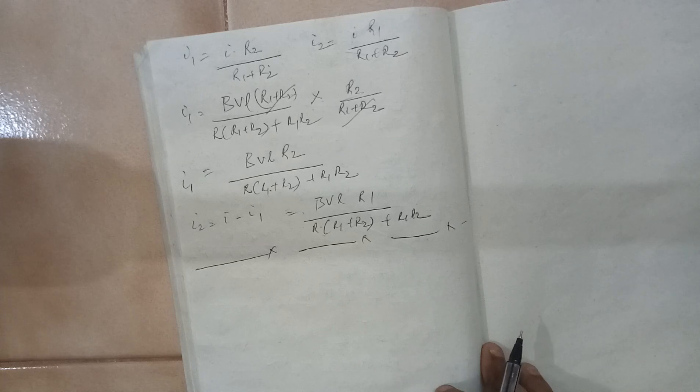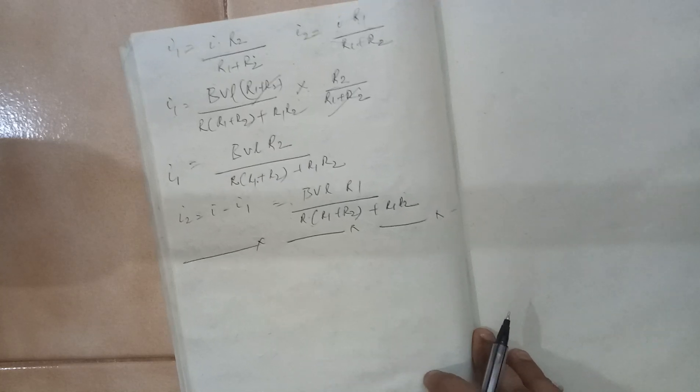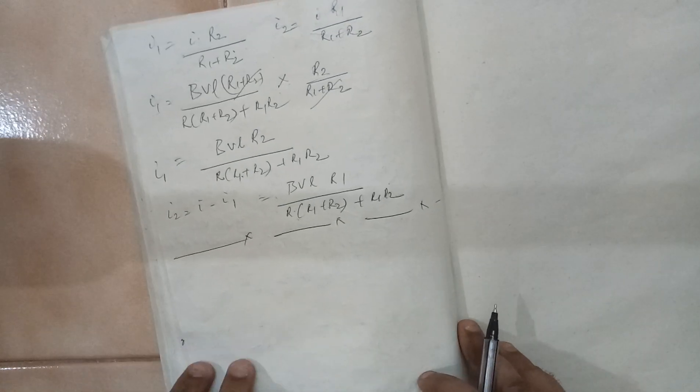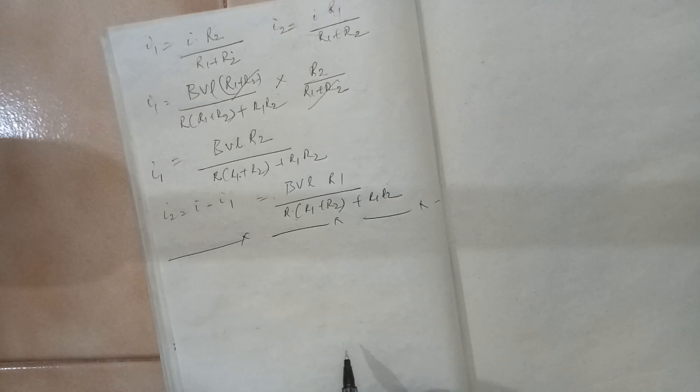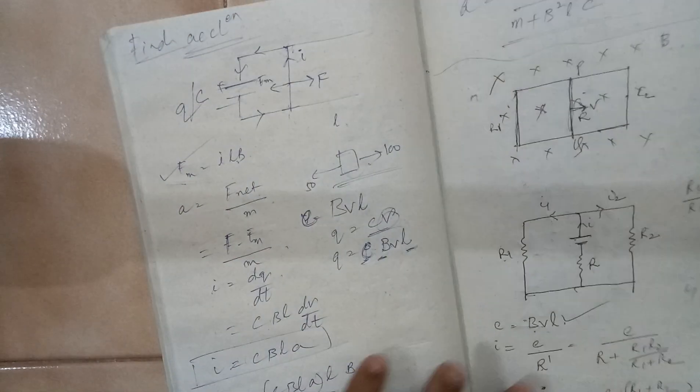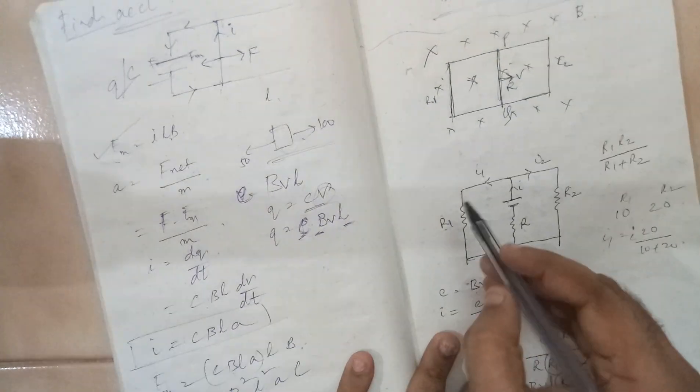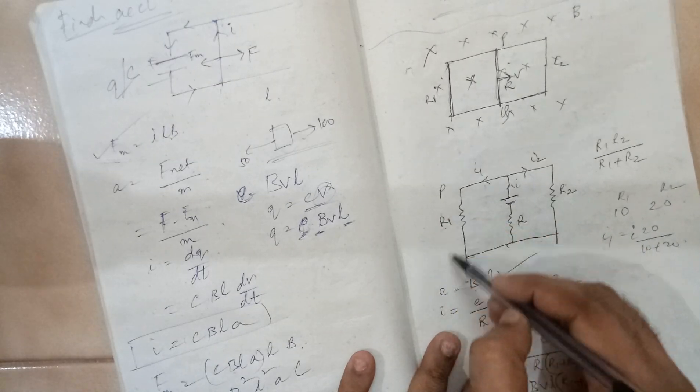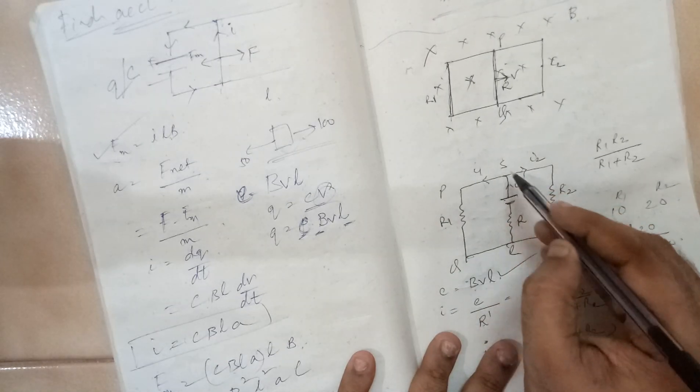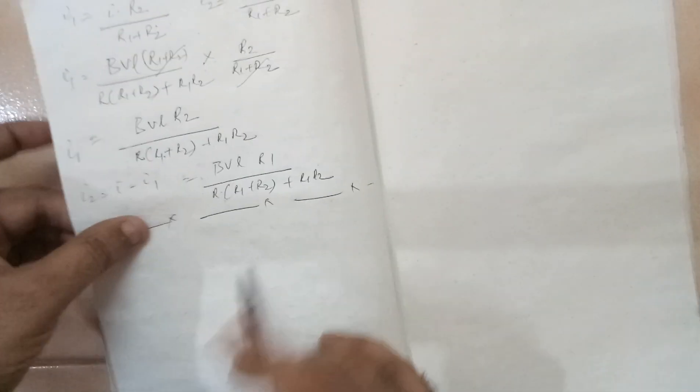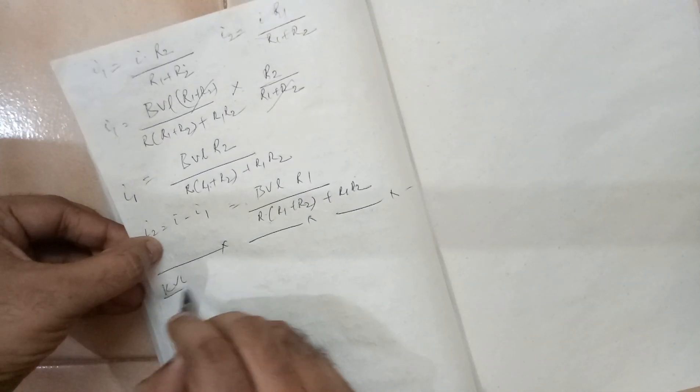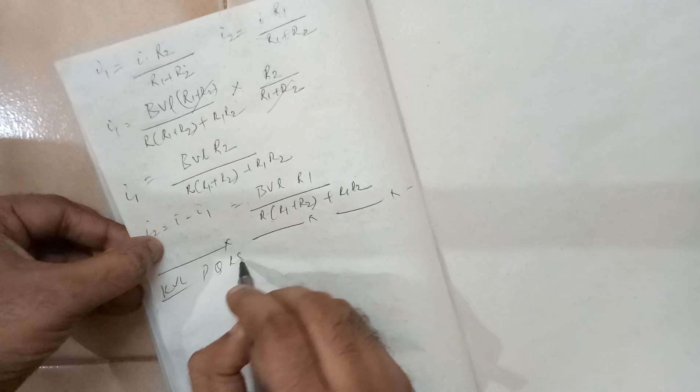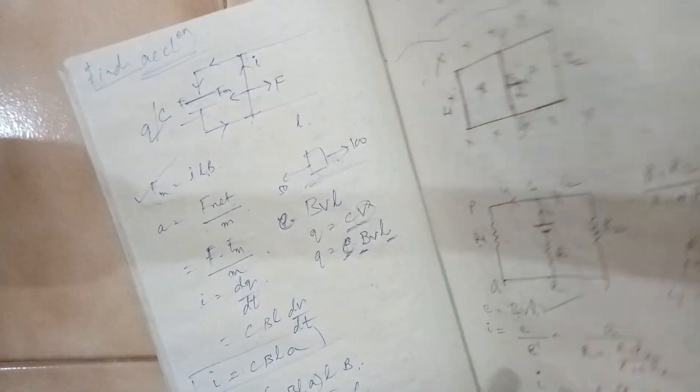Can we find out the currents using our Kirchhoff rules? Yes, we can find out using the Kirchhoff rule also. In the Kirchhoff rule, let us say I apply to P, Q, R, S and P. If I apply KVL to P, Q, R, S, P, what will I get?